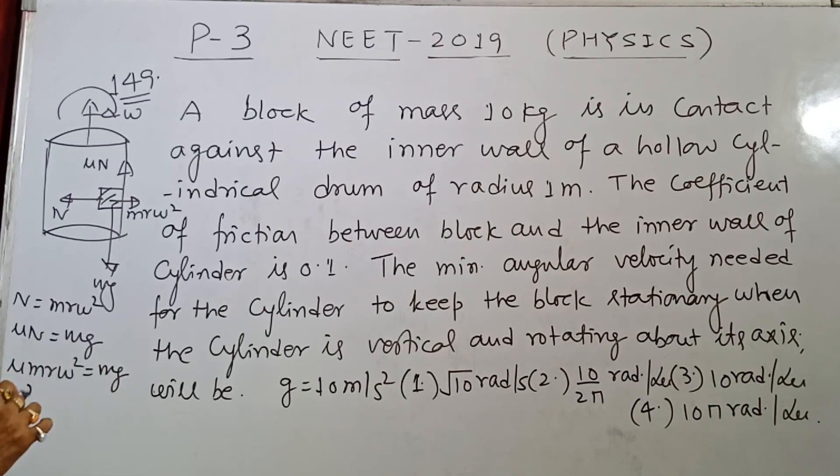M cancels out. Omega square equals G upon Mu R. Omega equals under root G upon Mu R.